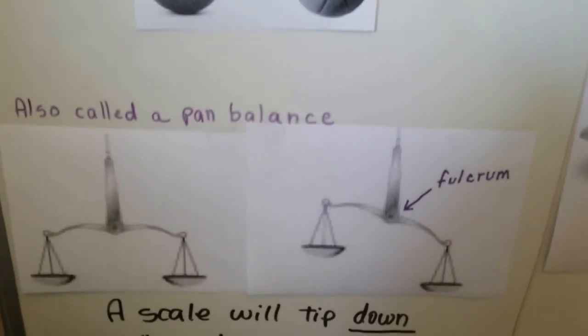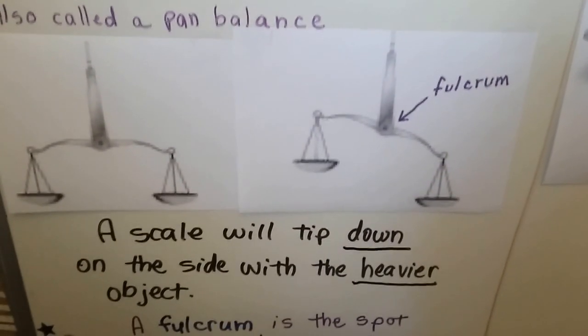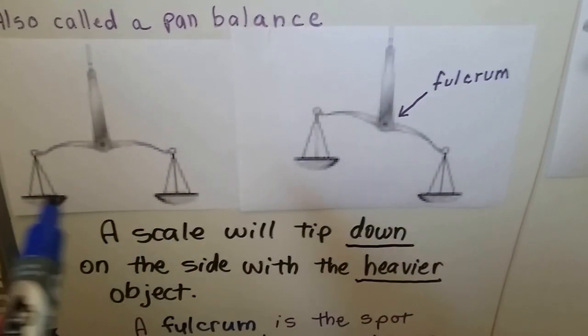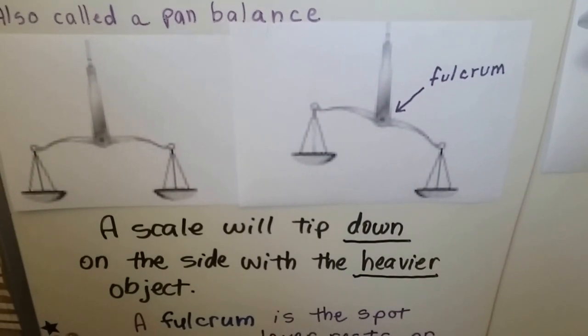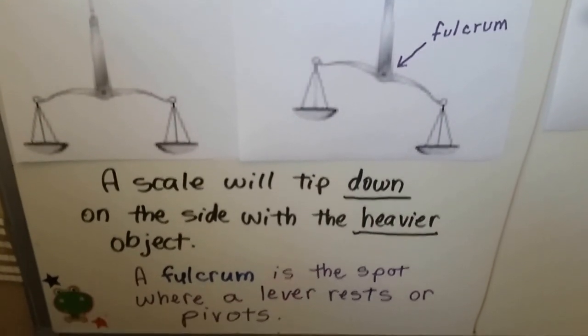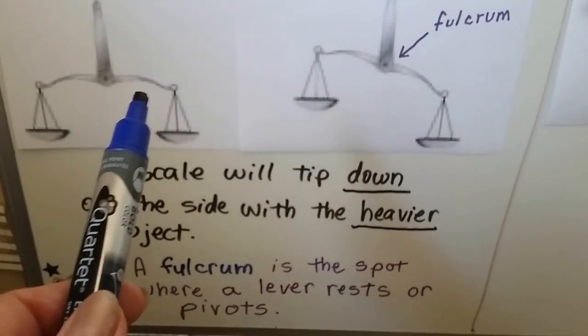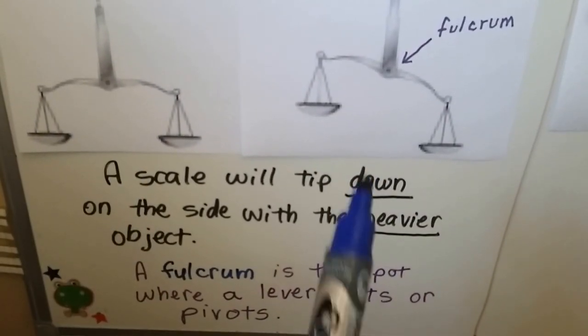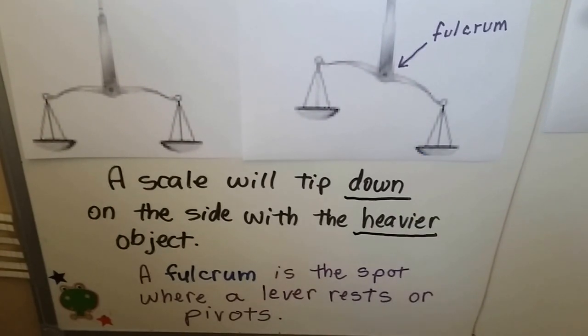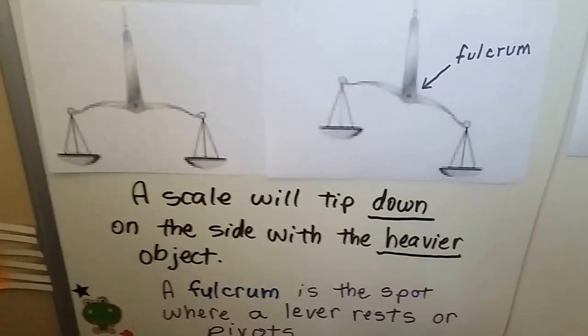Take a look at this. This is a scale. It's also called a pan balance. It works like a lever, like a seesaw. We put things in the pans, and the heavier side will go down. There's a point right here called a fulcrum. A fulcrum is a spot where a lever rests when they're at the same weight, or pivots when a heavier weight is on one side. There's a point right here where it pivots and where it tips.